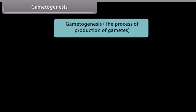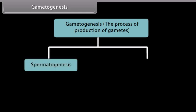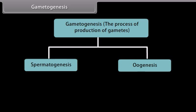Gametogenesis is the process of production of gametes. Males and females of a species have different forms of gametogenesis: spermatogenesis in males and oogenesis in females.